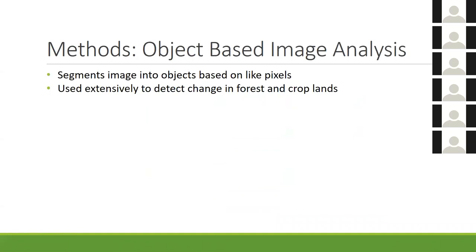A big part of my project is extracting water bodies from Landsat imagery using an object-based image analysis approach, specifically the eCognition software package. Unlike pixel-based classification, eCognition segments the image into image objects based on neighboring pixels with similar spectral values — a higher unit of analysis I've found helpful in previous work. This method has been used extensively to detect change in forests and cropland, but we haven't seen it used in the literature to classify water bodies on a large scale.